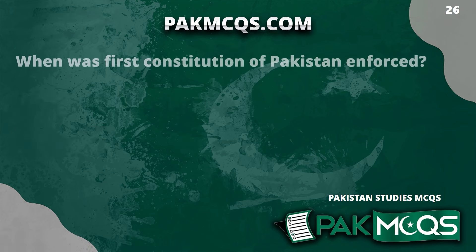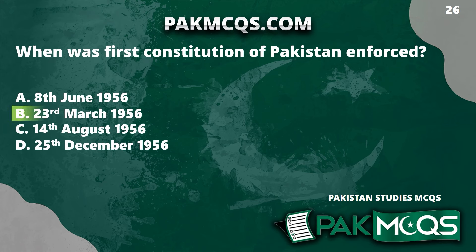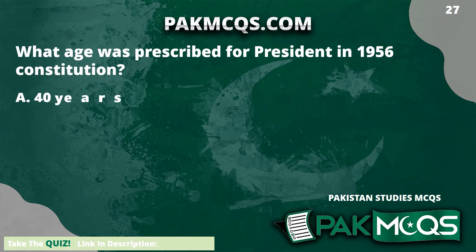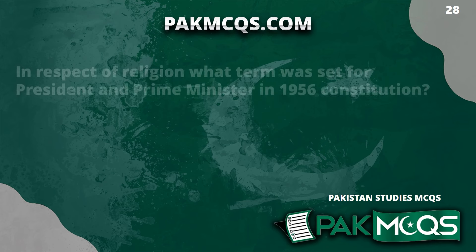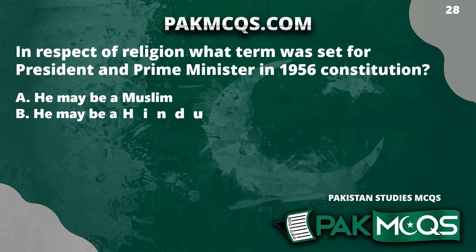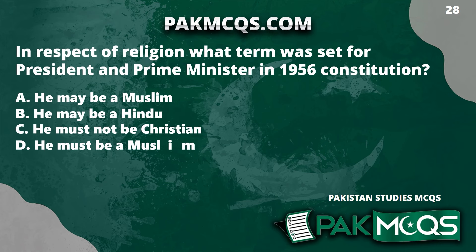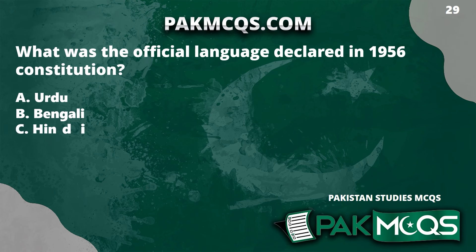When was the first constitution of Pakistan enforced? 23rd March 1956. What age was prescribed for the president in the 1956 constitution? 40 years. In respect of religion, what term was set for the president and prime minister in the 1956 constitution? He must be a Muslim. What was the official language declared in the 1956 constitution? Both Urdu and Bengali.